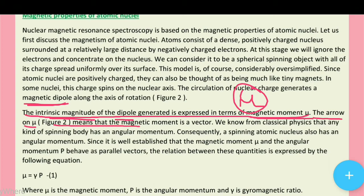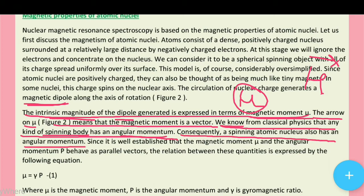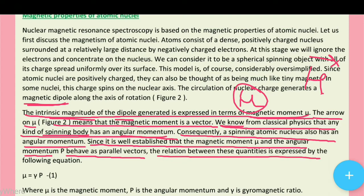The arrow on mu means that the magnetic moment is a vector quantity. We know from classical physics that any kind of spinning body has an angular momentum. Consequently, a spinning atomic nucleus also has an angular momentum. Since it is well established that magnetic moment mu and angular momentum p behave as parallel vectors, the relation between these quantities is expressed by the following equation. Angular momentum p aur magnetic moment mu dono parallel vectors hain.